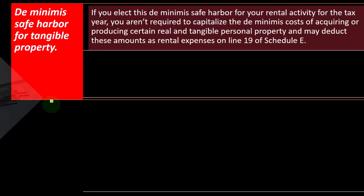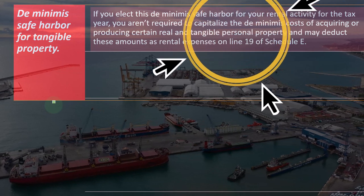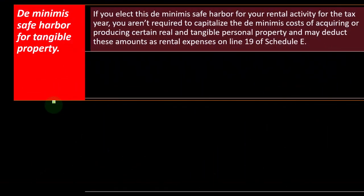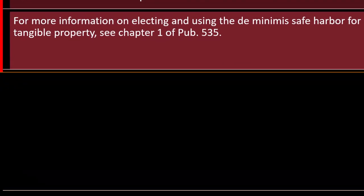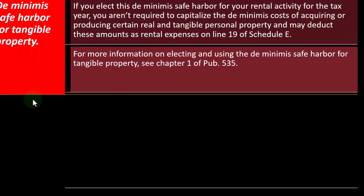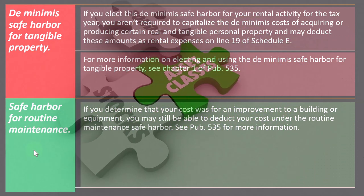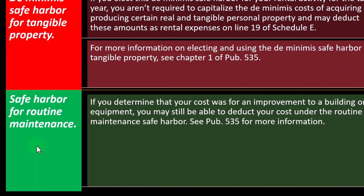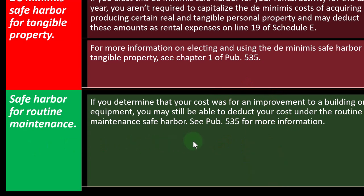De minimis safe harbor for tangible property: if you elect this safe harbor for your rental activity for the tax year, you aren't required to capitalize the de minimis costs of acquiring or producing certain real and tangible personal property and may deduct these expenses as rental expenses on line 19 of Schedule E. For more information on electing and using the de minimis safe harbor for tangible property, see chapter one of Publication 535. Safe harbor for routine maintenance: if you determine that your costs are for an improvement to a building or equipment, you may still be able to deduct your cost under the routine maintenance safe harbor. For more information, see Publication 535.